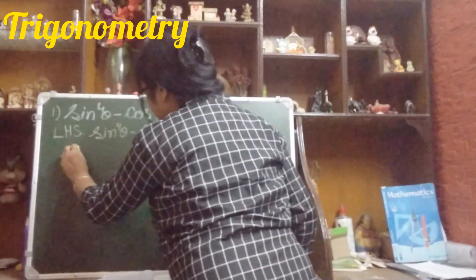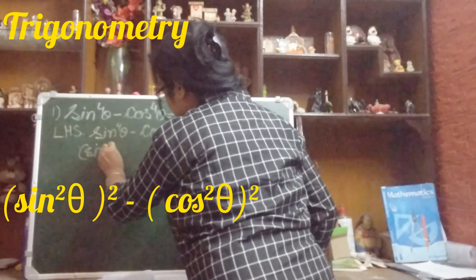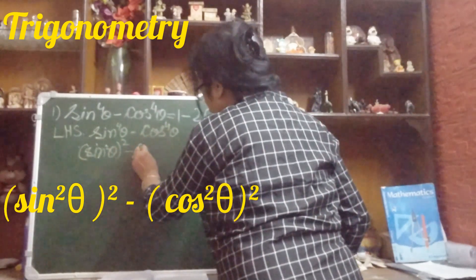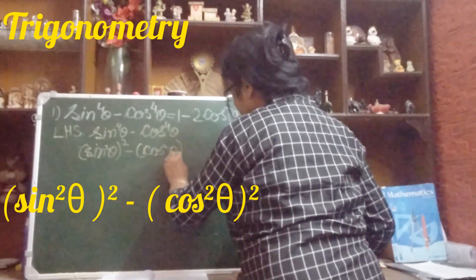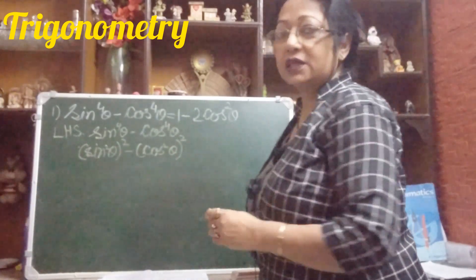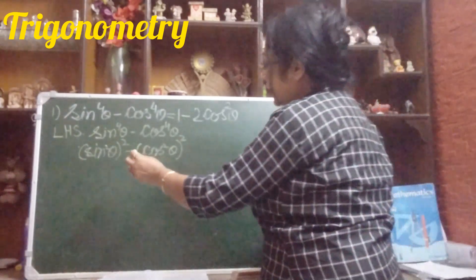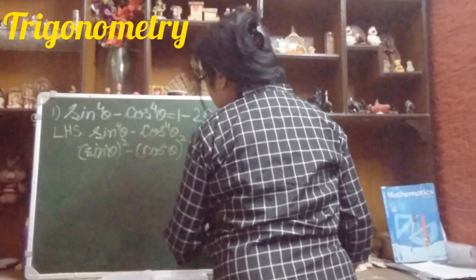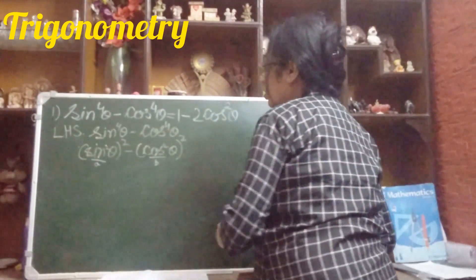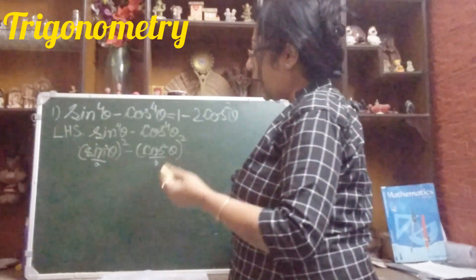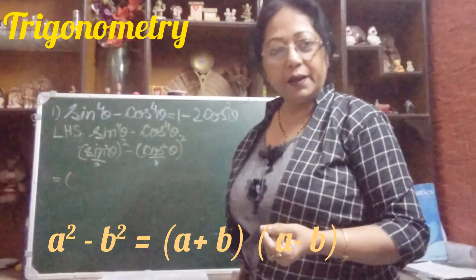Since the power is 4, we will break it. We break it as (sin²θ)² minus (cos²θ)². You see — (sin²θ)² minus (cos²θ)² — we can apply the formula a² minus b², where sin²θ is our a and cos²θ is our b. All of you know the formula: a² minus b² equals (a + b)(a − b).